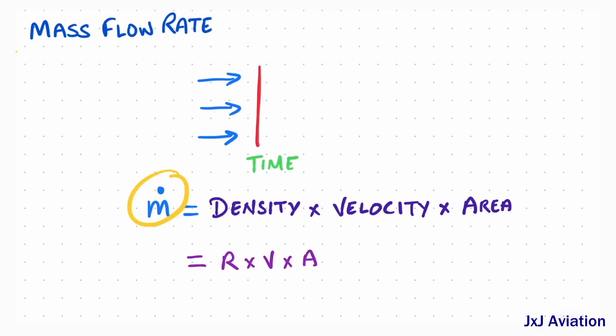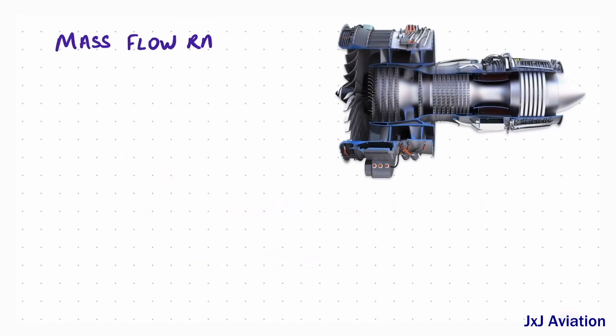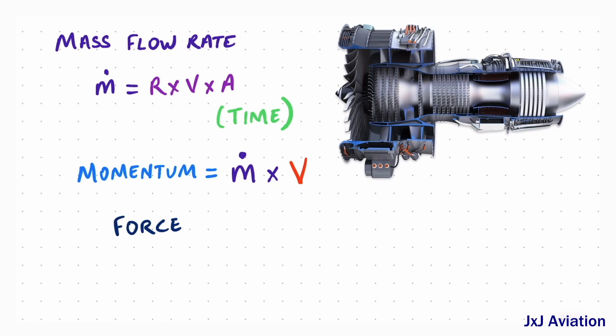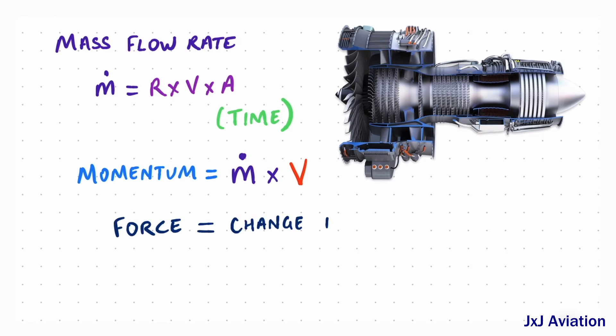Now, let's apply this in the thrust equation for an engine. Since the mass flow rate already has the time component, the momentum of the fluid is mass flow rate times velocity. The force is defined as the change in momentum across the engine. Let the exit of the engine be denoted by E, and the entry denoted by O. The force can be written like this.